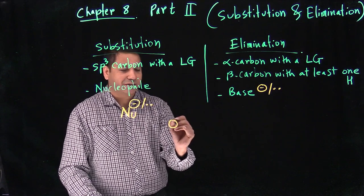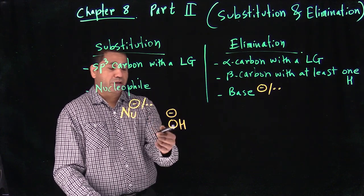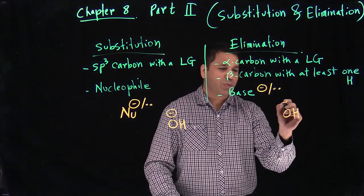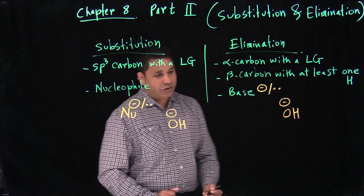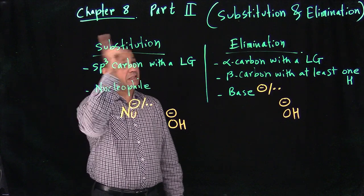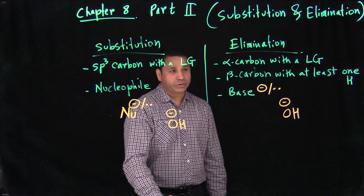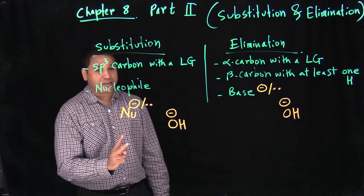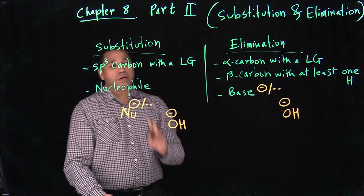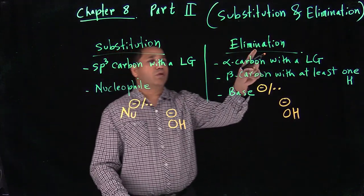So if you have OH⁻, that can be a nucleophile, and OH⁻ can also be a base. In other words, OH⁻ can do substitution in the same reaction and also do elimination in the same reaction. So you should expect two products, or maybe more depending on how many beta carbons we have, but at least two — one substitution product and one elimination product.